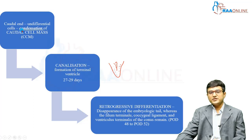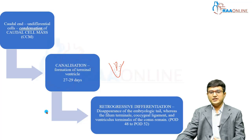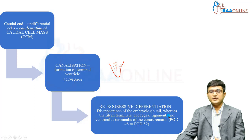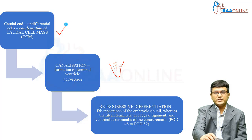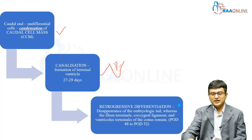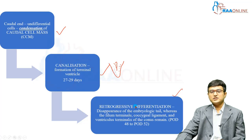These undifferentiated totipotent cells must then undergo retrogressive differentiation, leaving only three structures at the end: the filum terminale, the coccygeal ligament, and the terminal ventricle of the conus. The embryological tail and all other undifferentiated cells vanish. This occurs between post-ovulatory days 48 to 52. The three steps of secondary neurulation are therefore: formation of the caudal cell mass, canalization, and retrogressive differentiation.